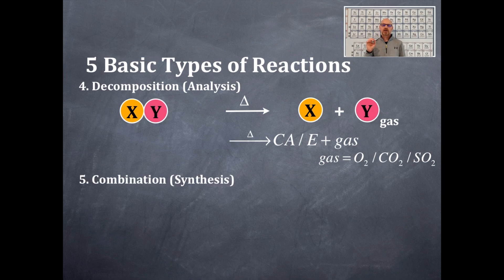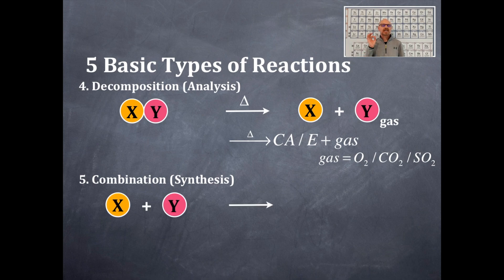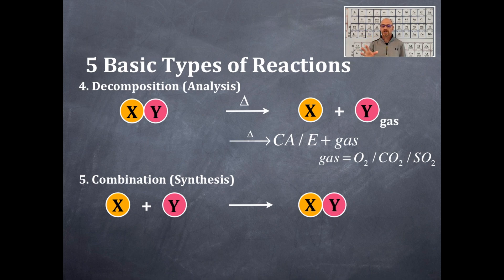The fifth type of reaction is a combination reaction, or synthesis. You should see that this synthesis is going to be exactly opposite that of a decomposition — it's kind of like the cycle of life. In a synthesis, you take two things together, slam them together, and you get one.